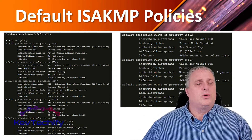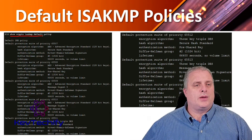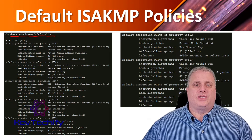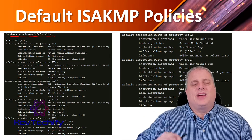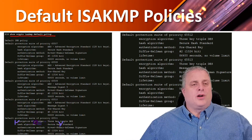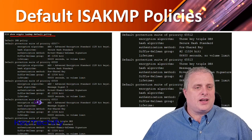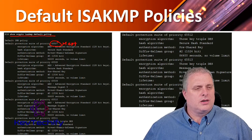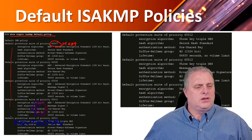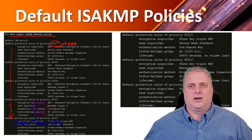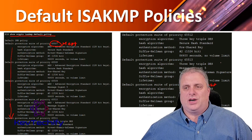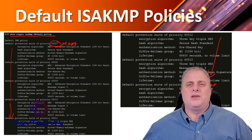On our router, when we type in our show crypto ISAKMP default policies, it's going to list out all of our default policies. This router has seven default ISAKMP policies, ranging from the most secure at 65,507 — this is the most secure — going all the way down to the least secure policy of 65,514. These are all the default policies.